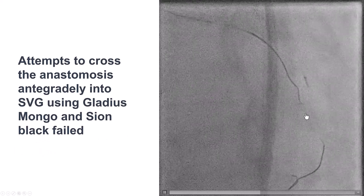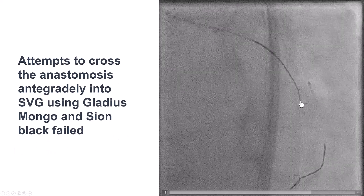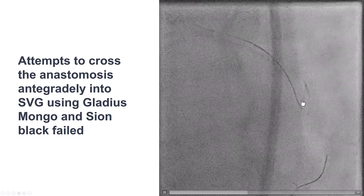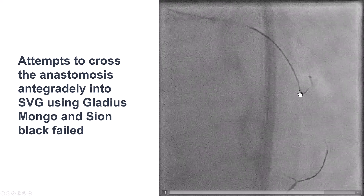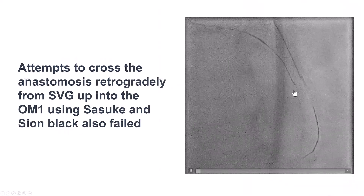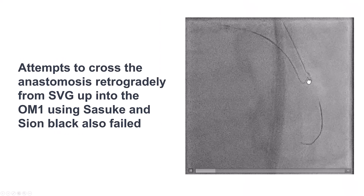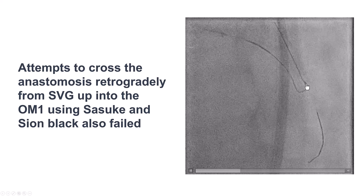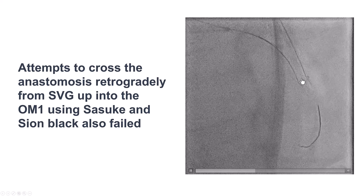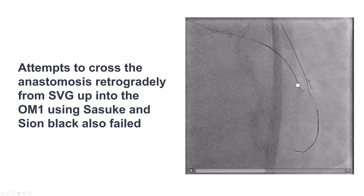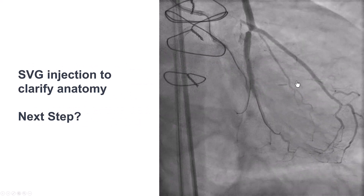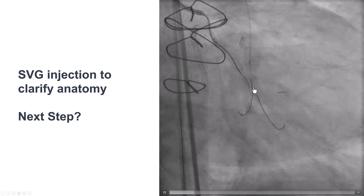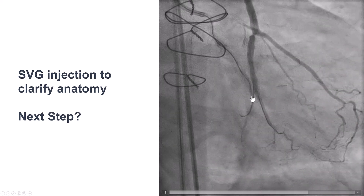We made multiple attempts to advance an antegrade wire into the distal OM1, but unfortunately the angulation was extreme and we could not advance the guidewire. We also tried to advance a guidewire retrograde using a Sasuki dual-lumen microcatheter and Sion Black wire, but once again had a lot of difficulty navigating through this extreme angulation. We were very close, but could not advance either an antegrade or retrograde wire into this portion of the vessel.